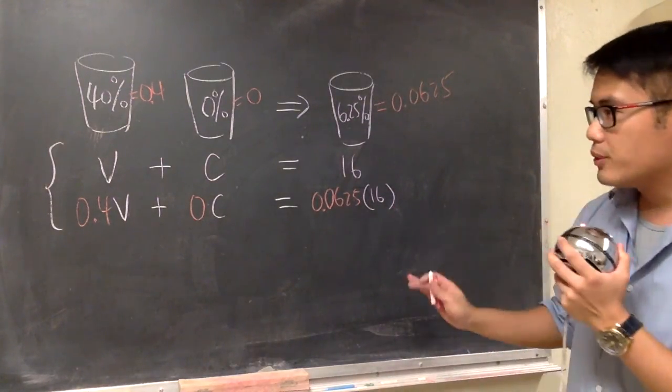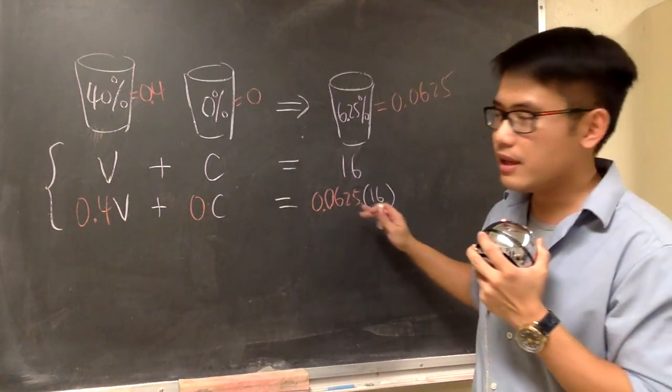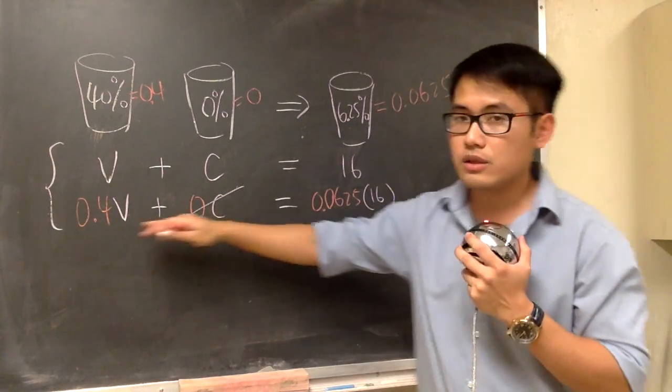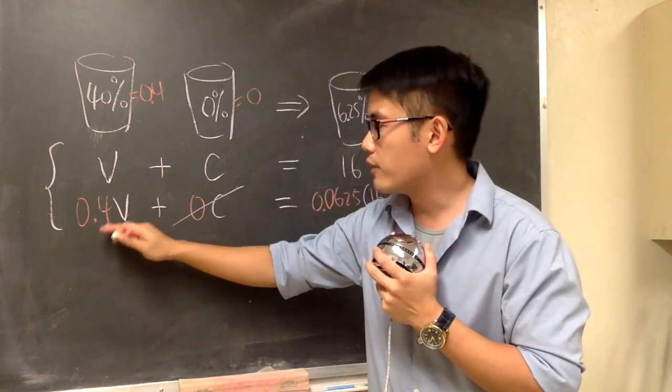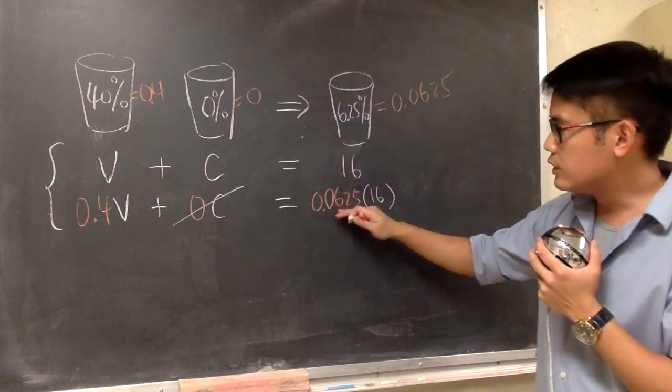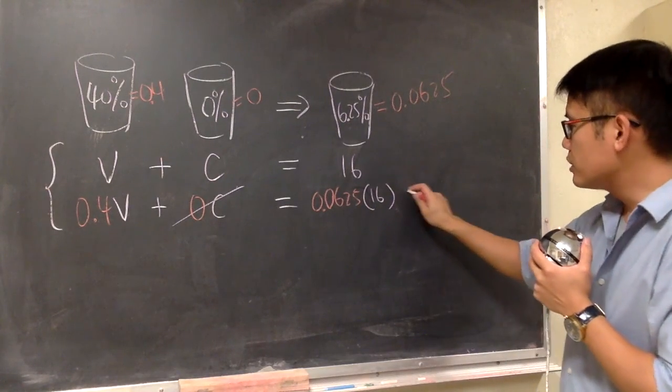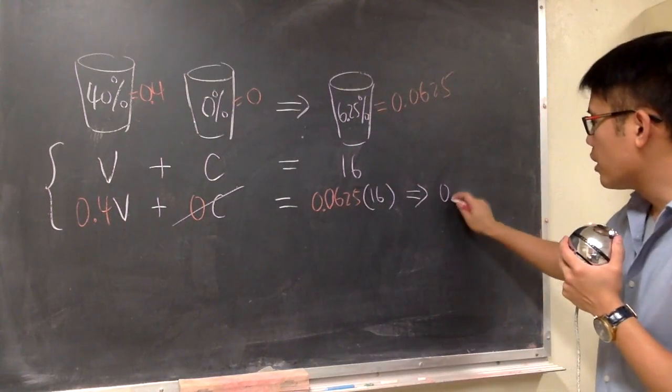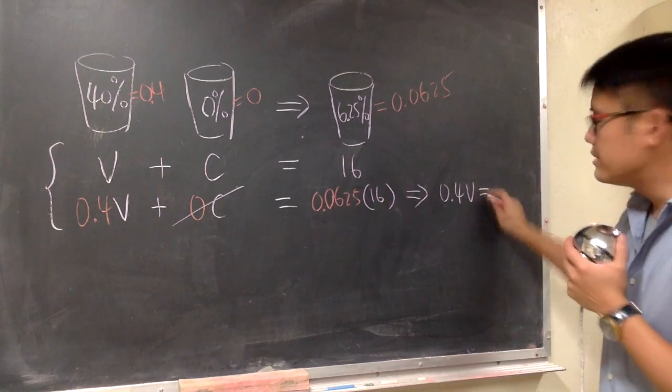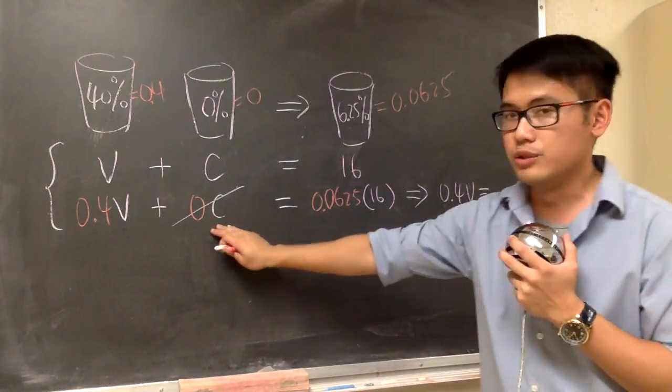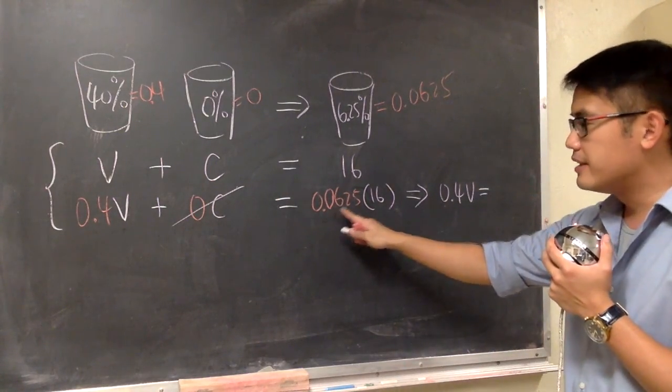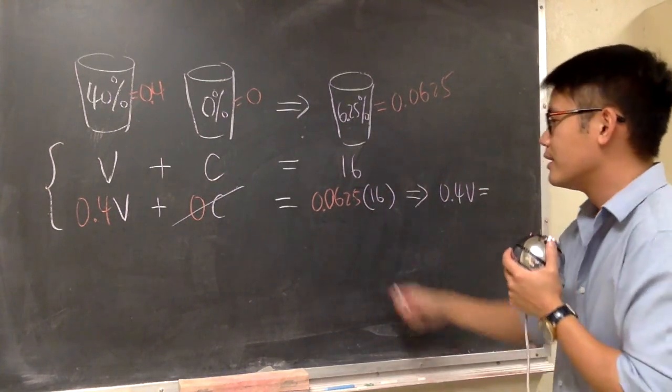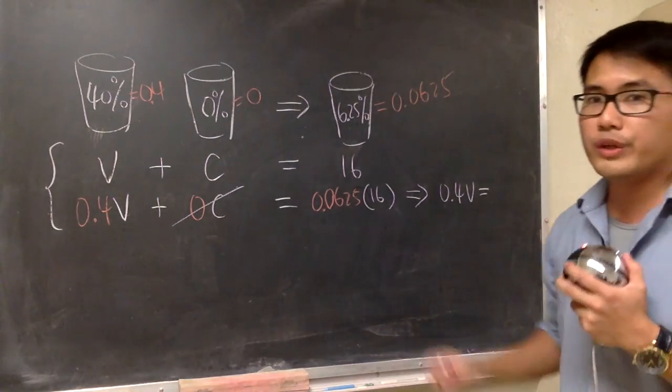And now you see, in this one, it's actually not bad because from the second equation, you have 0 times C. So the second equation just has one variable. 0.4V is equal to 0.0625 times 16. So let me just put this down right here for you guys. For the second equation, we technically just have 0.4V. And this is equal to, this is just 0, so it doesn't matter. We have to multiply this and that together. You can use the calculator to multiply it out. When you do that, you actually end up with 1. 0.0625 times 16, we get 1.